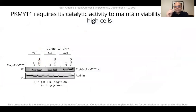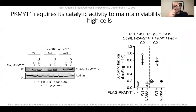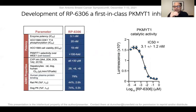We validated that PKMYT1 really does display a synthetic lethal interaction with cyclin E1 cells — in other words, that loss of PKMYT1 causes lethality in cyclin E1-high cells. We also validated that this requirement for PKMYT1 in cyclin E1-high cells required the catalytic activity of PKMYT1, which set the stage for the development of inhibitors targeting PKMYT1.